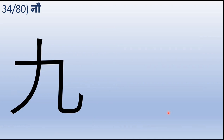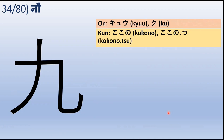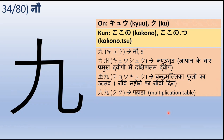Chautiswa kanji hai sankhya 9. Onyomi mein isse kehte hain Kyu ya Ku, aur kunyomi mein Kokono ya Kokonotsu. Kyu yaani nao ya sankhya 9. Kyushu — yaani Japan ke chaar pramukh dvipon mein dakshintam dvip, Kyushu islands. Chokyo — Chokyo ka arth hai chandramalli ke phoolon ka utsav yaani chrysanthemum festival, jo nauwe mahine ke nauwe din manaya jaata hai. Aur Kuku ko hum multiplication table yaani pahada kehte hain.